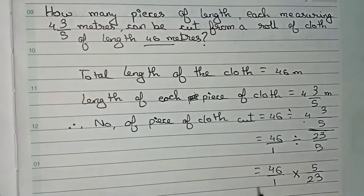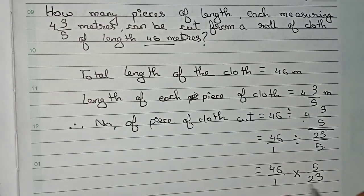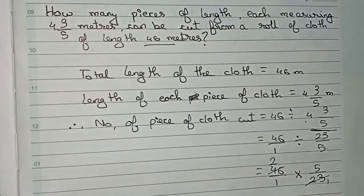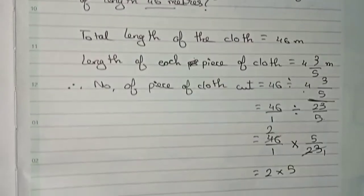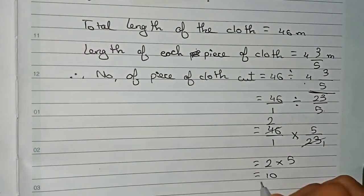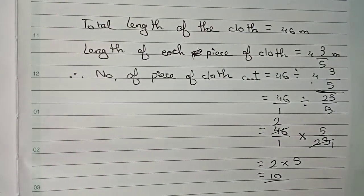Now I can cut 23 and 46 directly. It will become 2, so it remains 2 times 5, which equals 10. Therefore, total 10 pieces of cloth can be made from 46 meters.